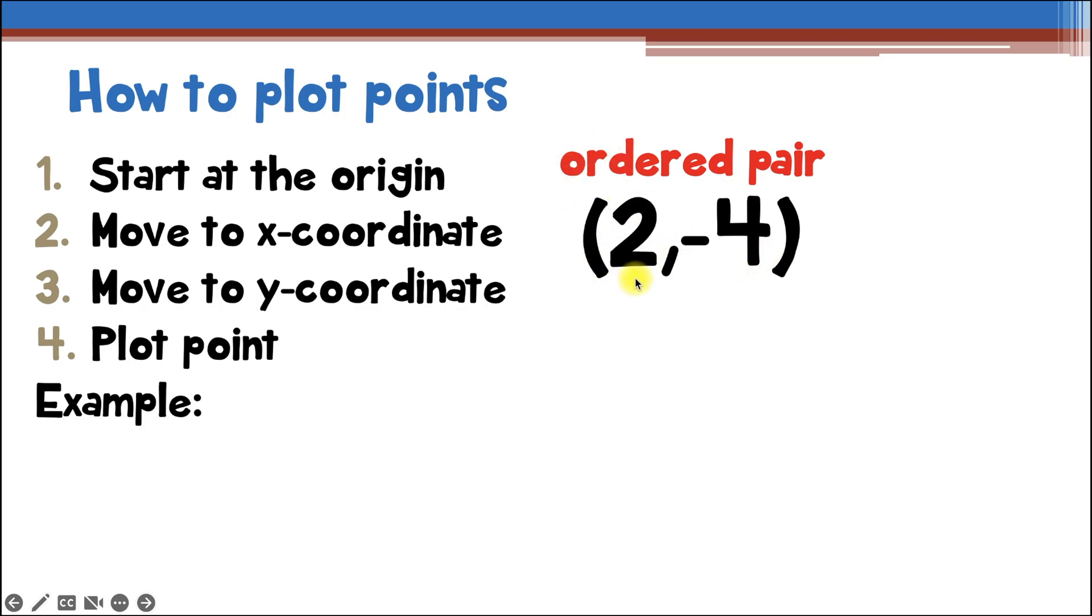This first number in the ordered pair is our x coordinate, and it tells us to move left or right on the number line. Left if it's negative, and right if it's positive. Because remember, that's where the numbers are on the number line. To the right if they're positive, and to the left if they're negative.